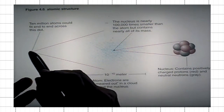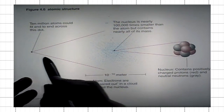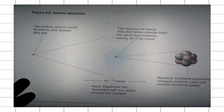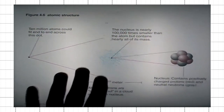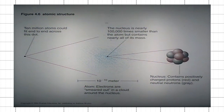This example tells you that in the size of this dot here, you could probably fit 10 million atoms from one end to another. Therefore, they are extremely small. We cannot see them with our eyes or under the microscope. There are different techniques where people can actually image different parts of the atom.